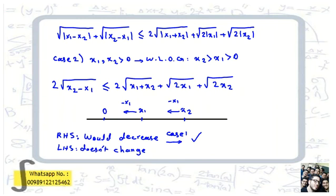What we've concluded so far: it is useful to focus on variables that are zero, and also the idea of shifting variables — replacing xi by xi plus alpha. If we shift variables and the left hand side doesn't change, but the right hand side decreases, then we only need to verify the inequality at the minimum of the right hand side.